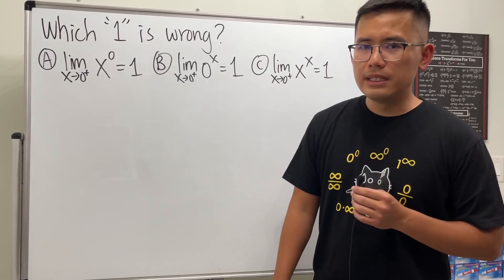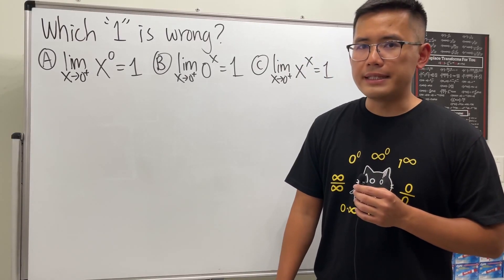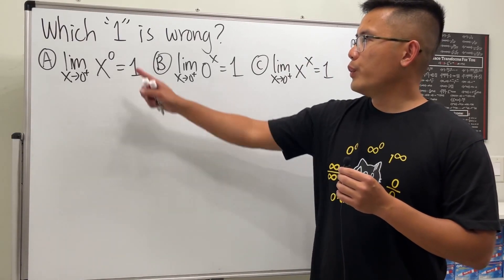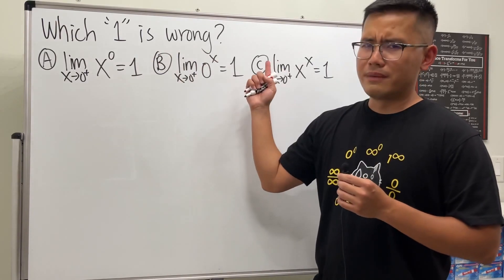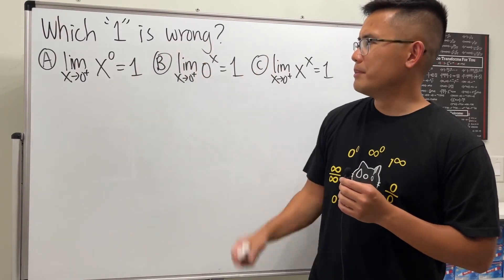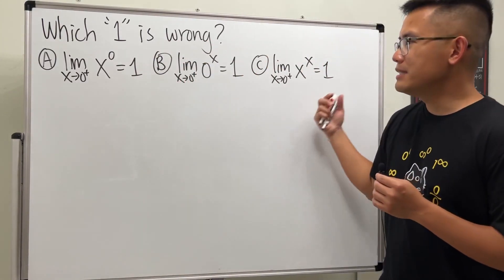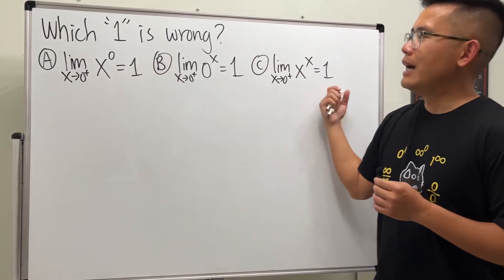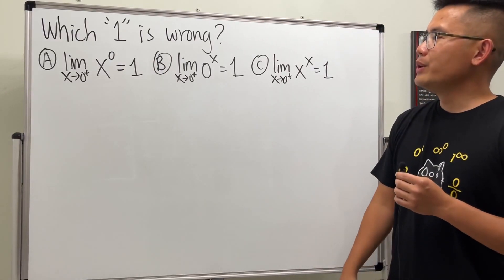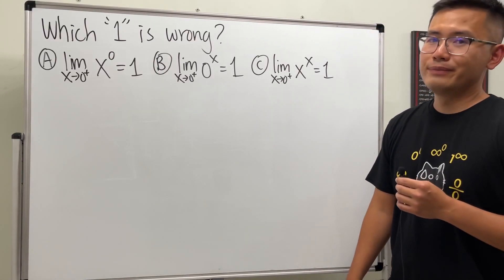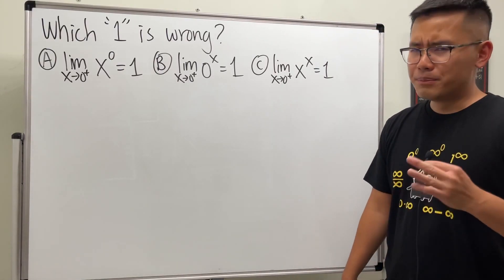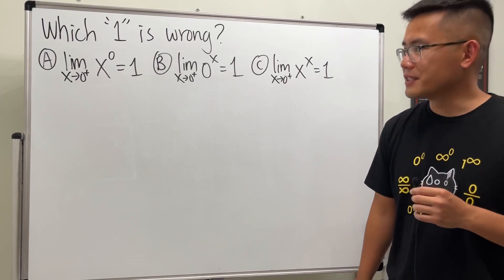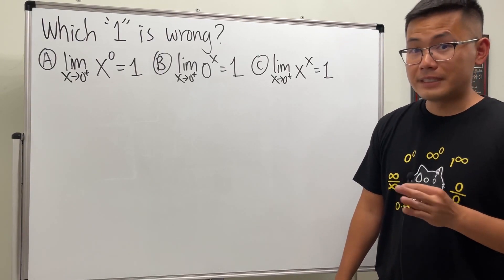Here I have a very interesting limit question. I gave you three limits and I tell you they are all equal to one — which one is wrong? Pause the video and think about this first.